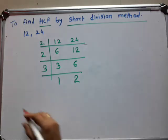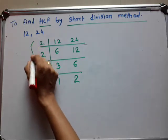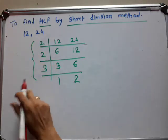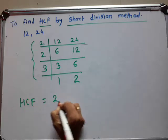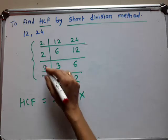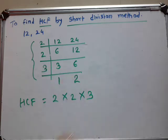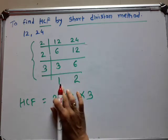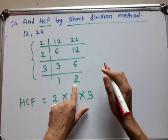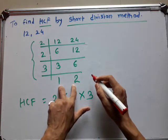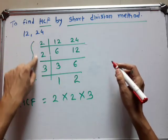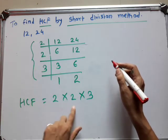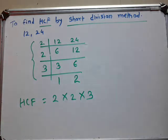So here we get the SCF. These are the common numbers. So the SCF of these numbers is 2 multiplied by 2 multiplied by 3. These are the common factors — 2 multiplied by 2 multiplied by 3.